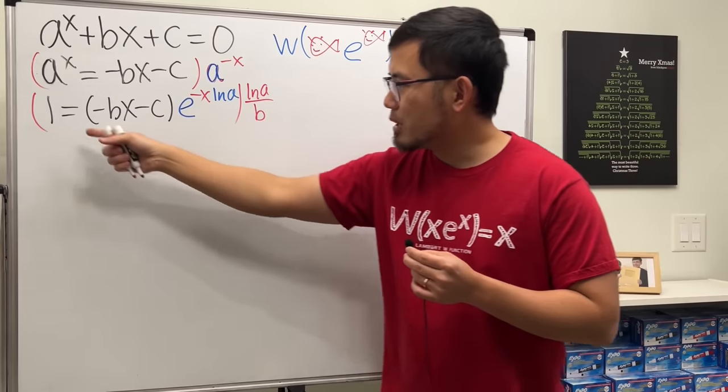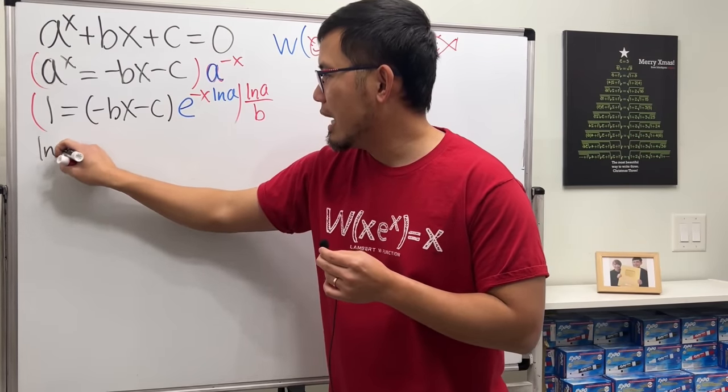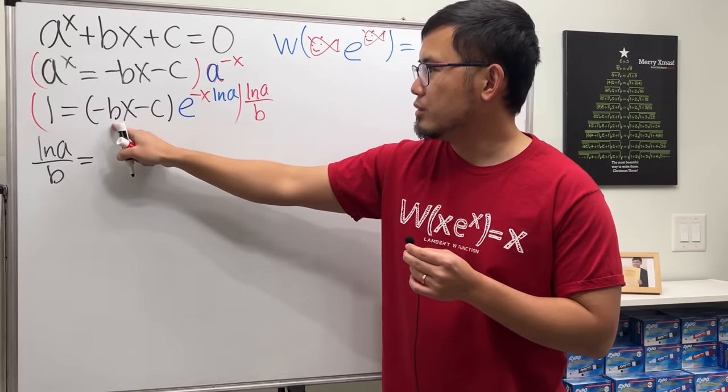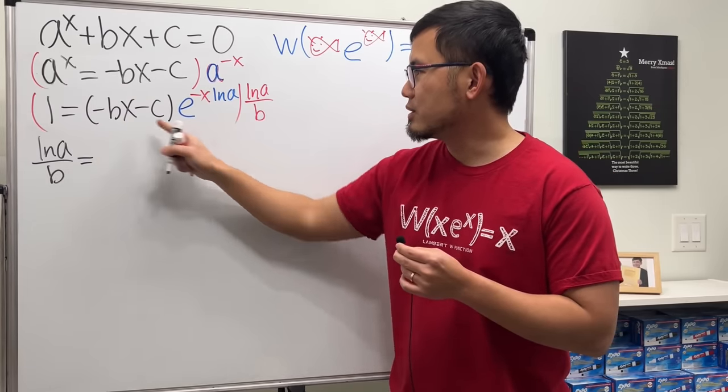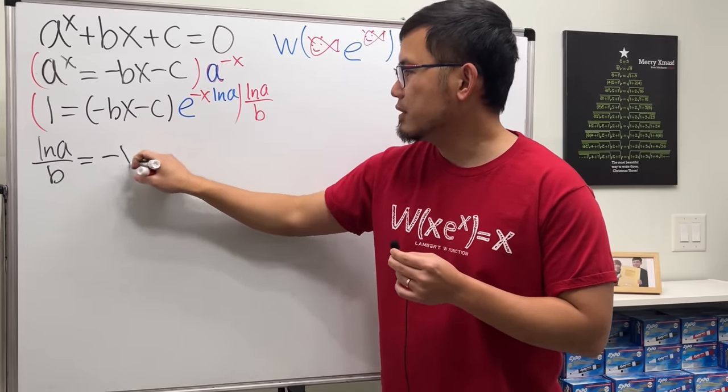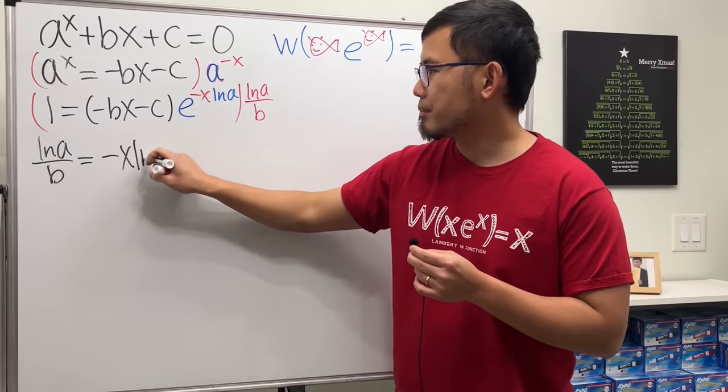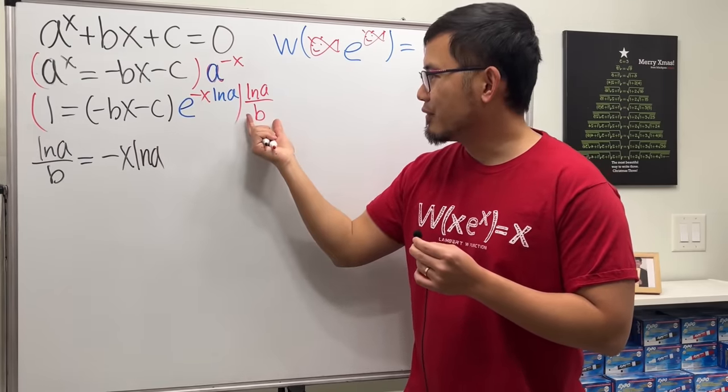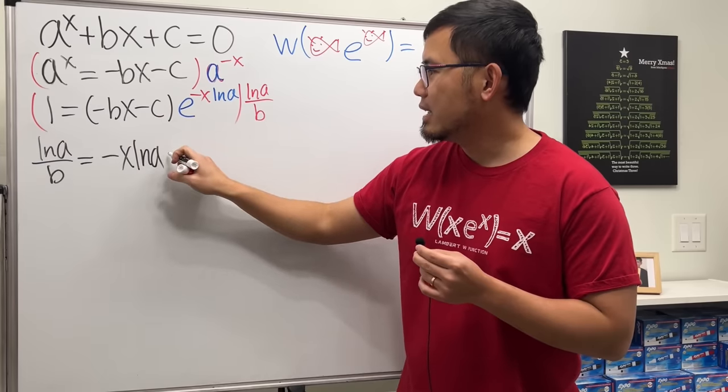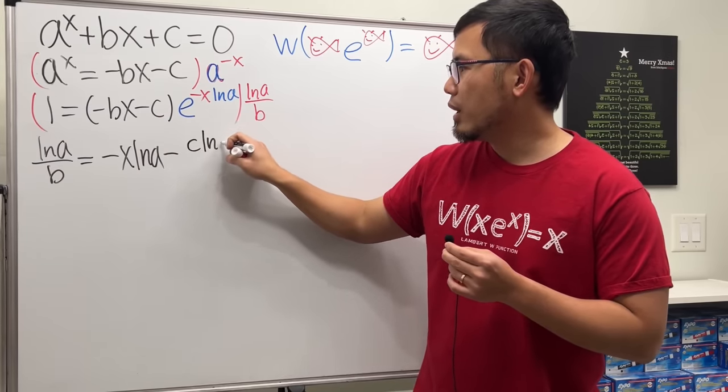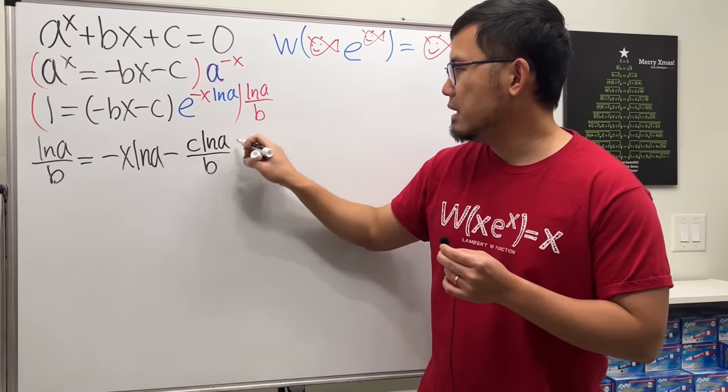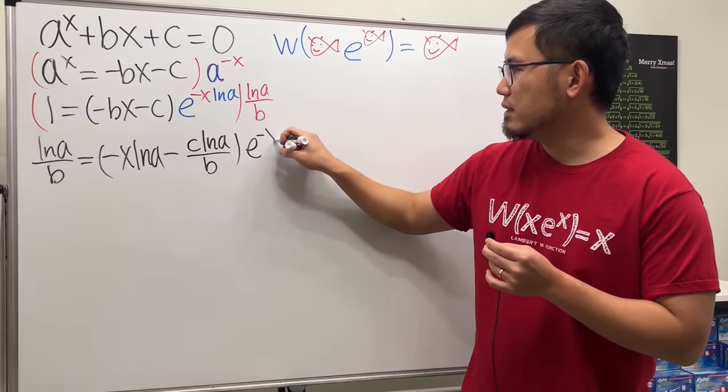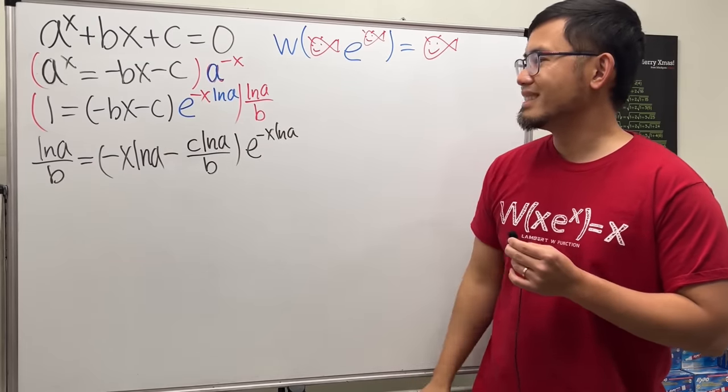Now, take this, multiply it by that. We have ln a over b. And that's equal to, take that, distribute. Well, b and b cancel. We just have negative. Let me write down the x first. And then ln a. Ah, this and that match. Nice. And then, of course, take this, multiply with that. So that's minus C ln a over b. And then raised, well, actually, e to the negative x ln a power. Just like that.